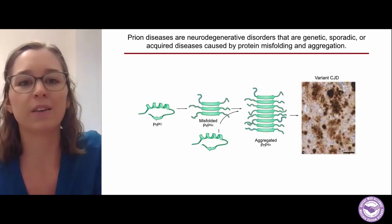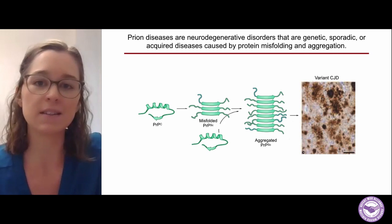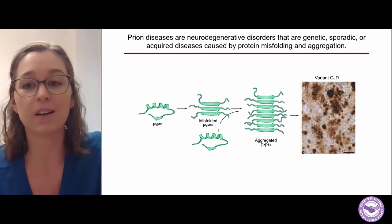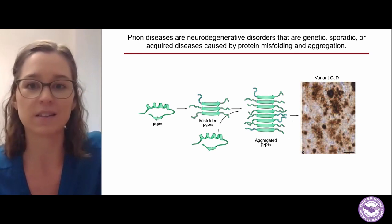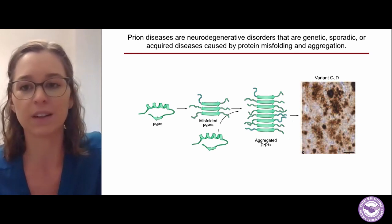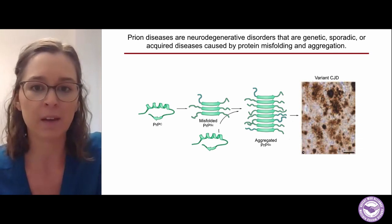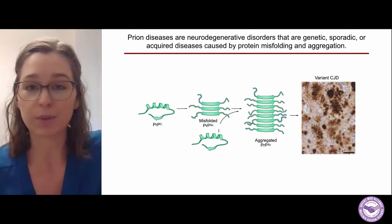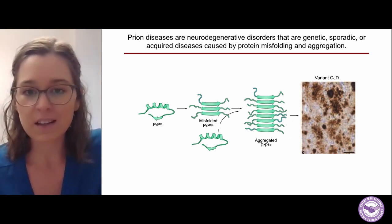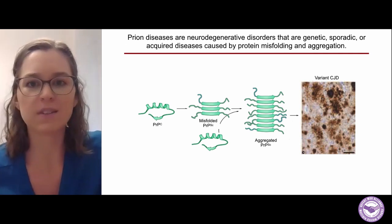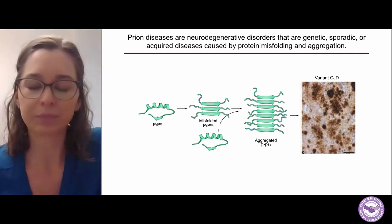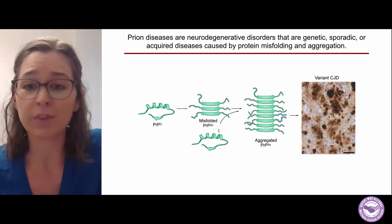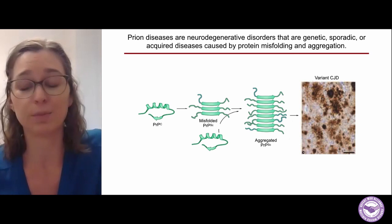I'd like to begin by providing a little bit of background on prion diseases for those who aren't as familiar with them. They're neurodegenerative disorders that are genetic, sporadic, or acquired diseases that are caused by protein misfolding and aggregation in the brain. The cellular form of PRPC, the prion protein, is high in alpha helices, and it can misfold into a stacked beta sheet structure.